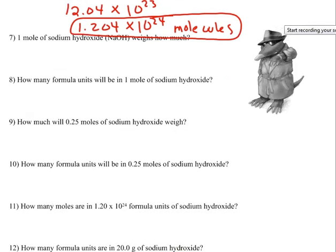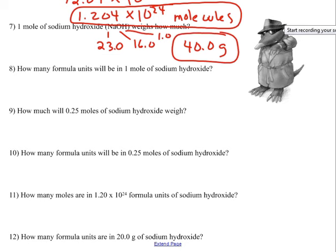Question number seven says, one mole of sodium hydroxide, NaOH, weighs how much? Consulting your periodic table, you will find that sodium weighs 23.0 to the nearest tenth, one oxygen weighs 16.0, and one hydrogen weighs 1.0. So adding all that up, you get 40.0 grams. So one mole of sodium hydroxide will weigh 40.0 grams.